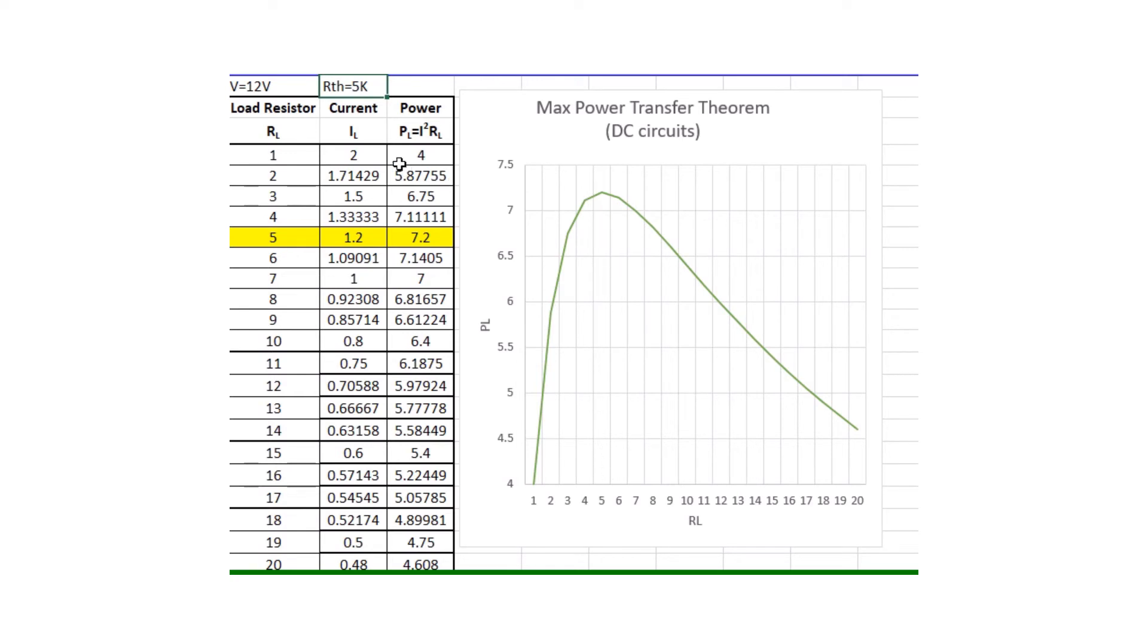For any of the values, either smaller or greater than 5k, we get lesser power. The same concept is extended to AC circuits.